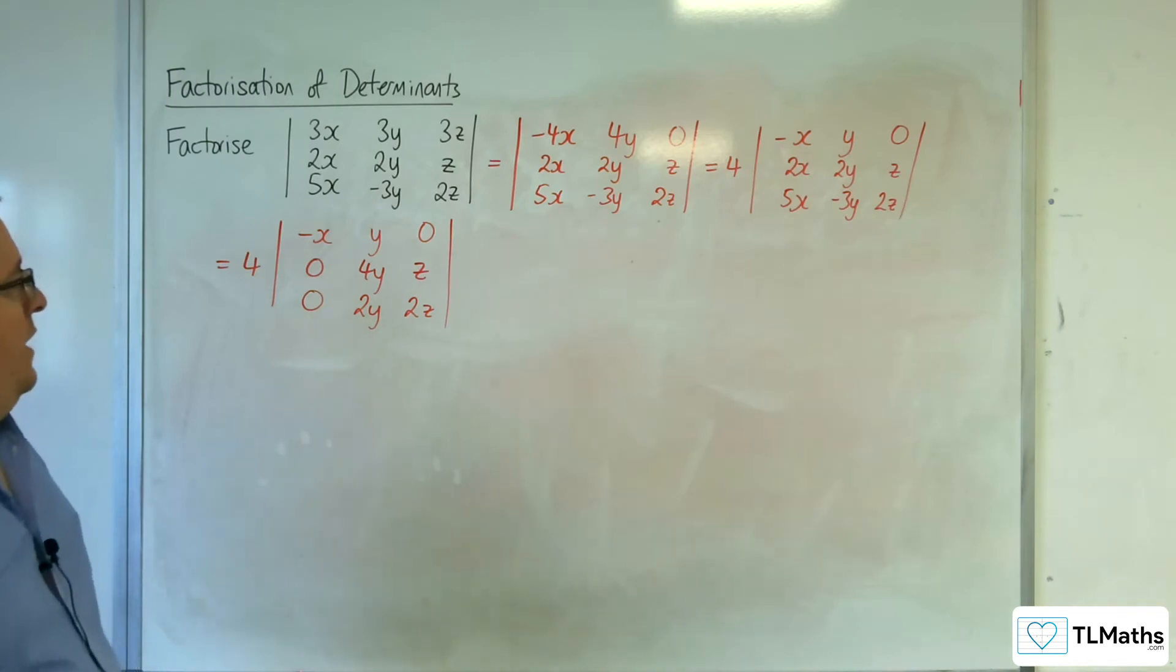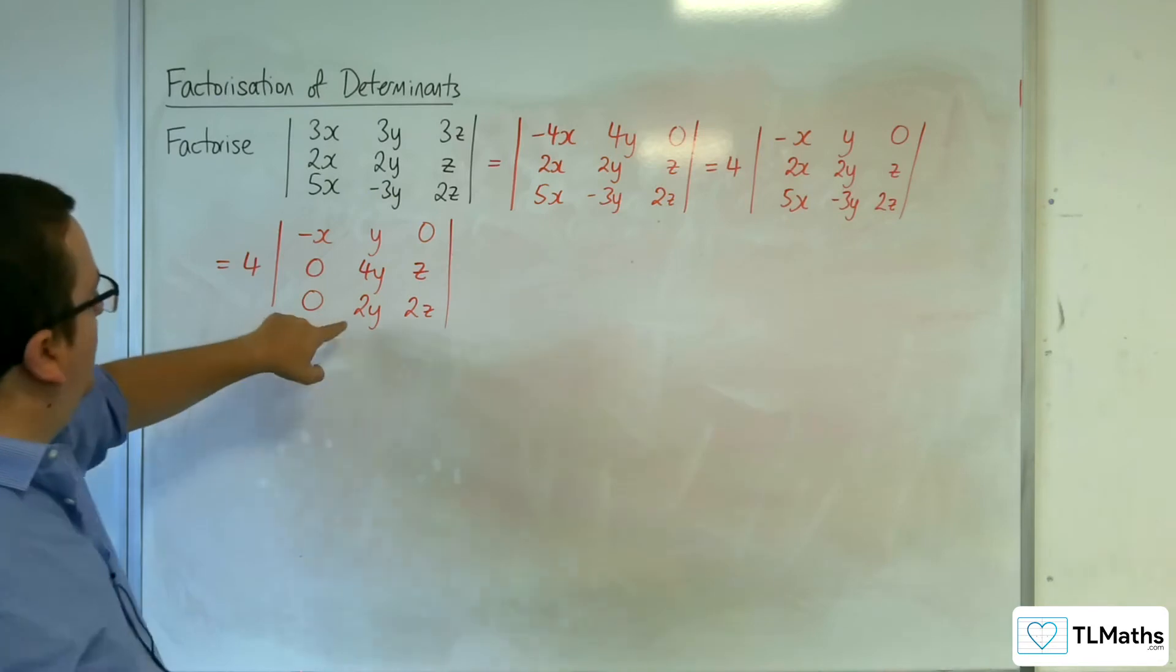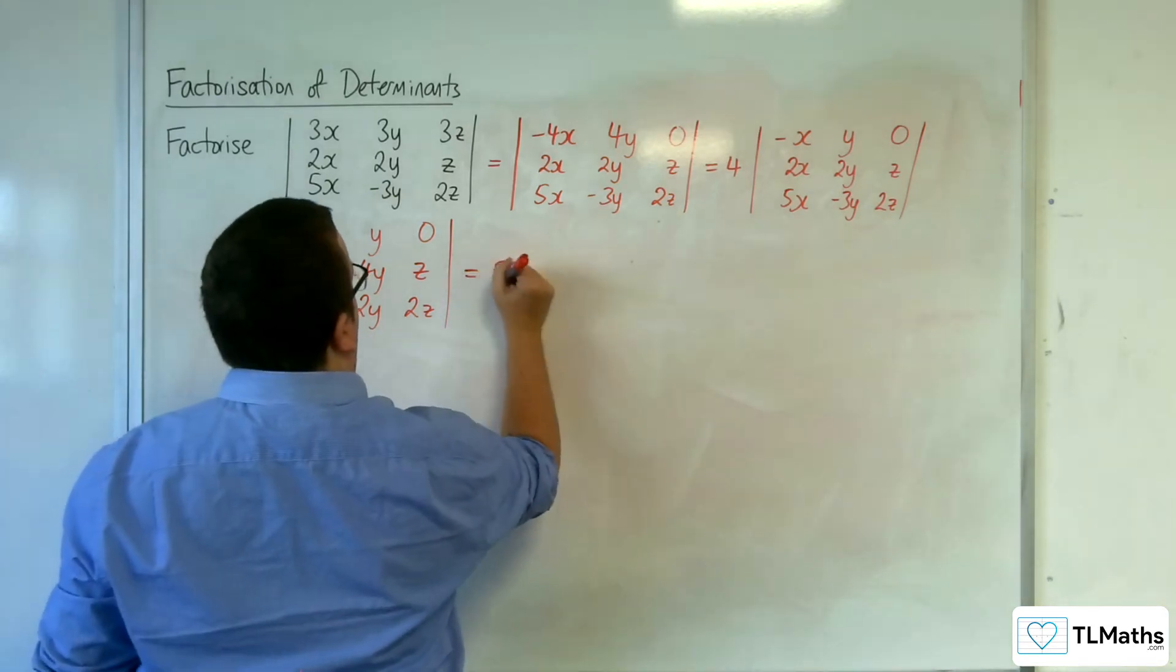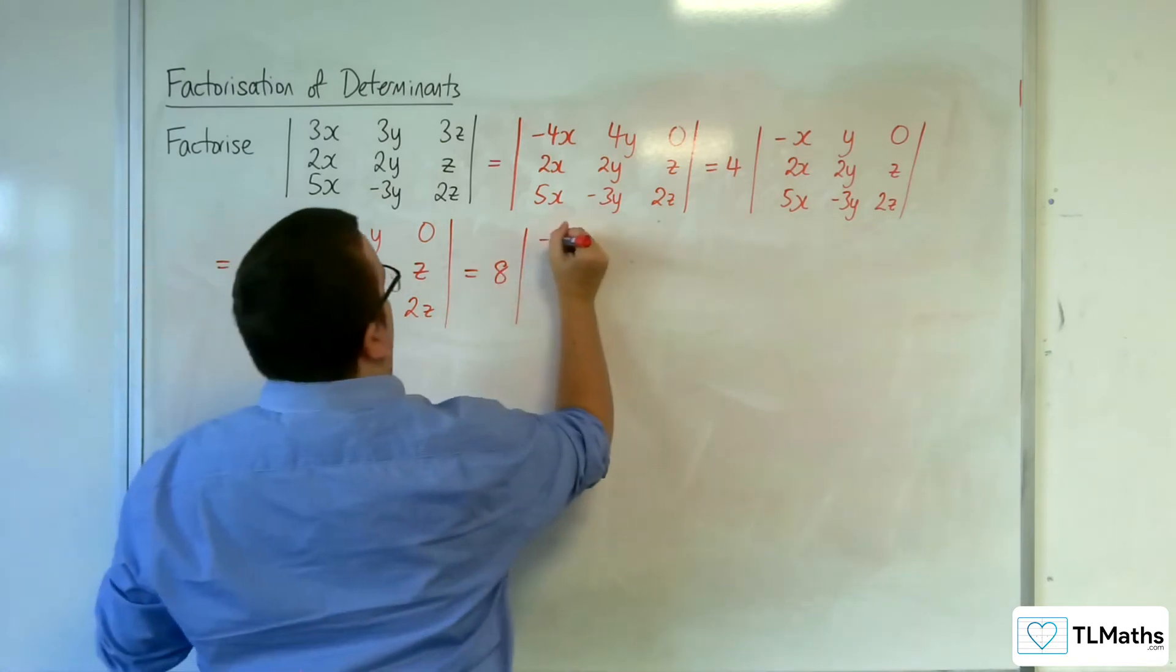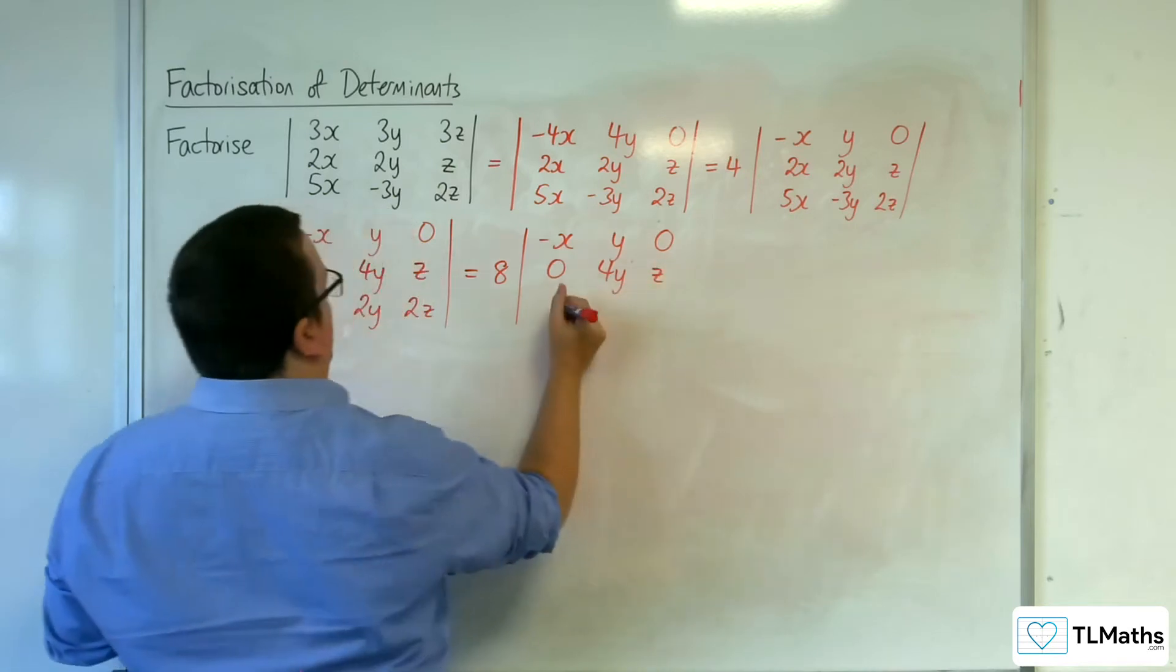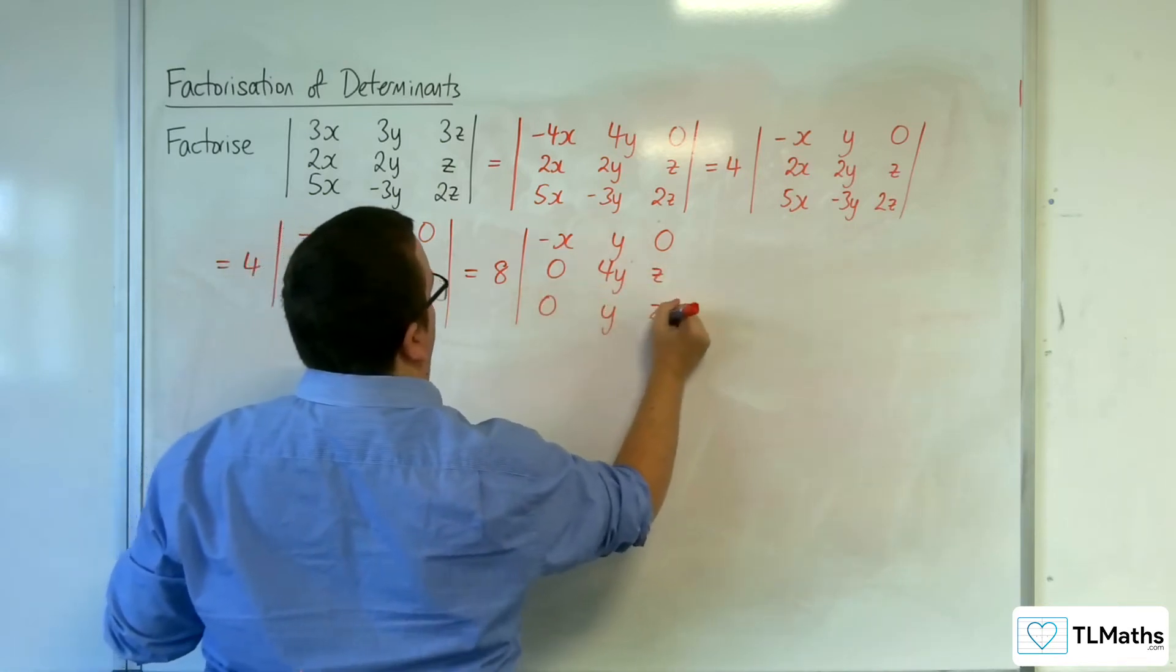Okay, you might then go, right, okay, well, at this stage I've got another factor of 2 that I can pull out. So let's do that, so I'm going to now have 8 minus x, y, 0, 0, 4y, z, 0, y, z.